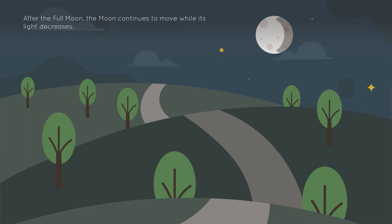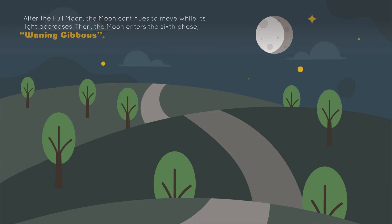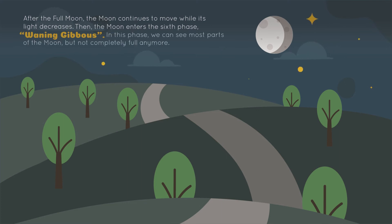After the full moon, the moon continues to move while its light decreases. Then the moon enters the sixth phase, the waning gibbous. In this phase, we can see most of the moon, but not completely full anymore.